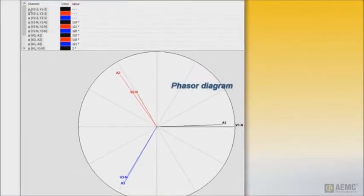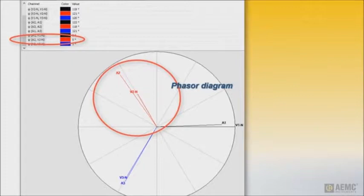As shown on the screen, phase shift values are displayed both graphically and in tabular format. In this case, the phase shift between current and voltage for phase 2 is 5 degrees.